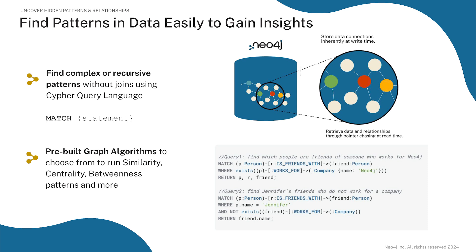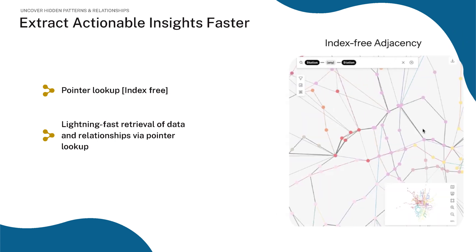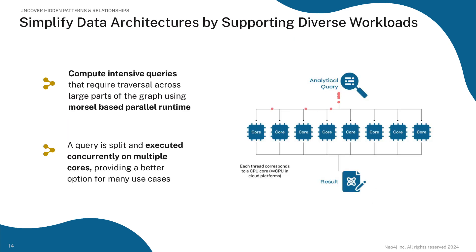We also provide pre-tuned graph algorithms to find patterns like shortest path, similar nodes, or degree centrality, and much more. Traversing through graph data is fast due to index-free adjacency, where each node directly references its adjacent or neighboring nodes, meaning accessing relationships and related data is very efficient.